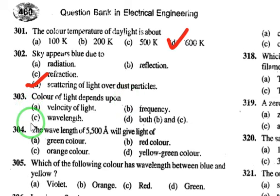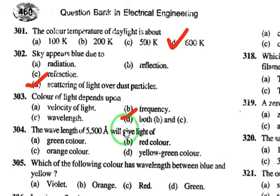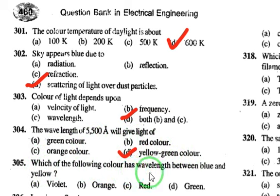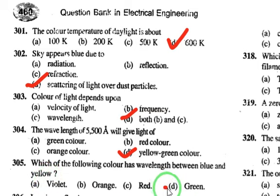The color of light depends not only on wavelength but also on frequency, so the answer is both B and C. The wavelength of 5500 angstroms gives yellow-green color. The color between blue and yellow in the spectrum is green, so the answer is green.